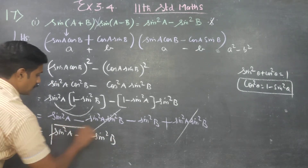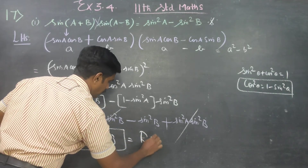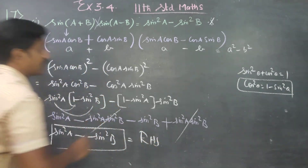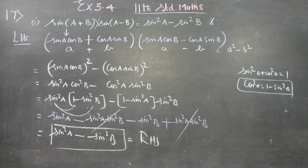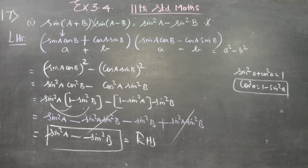LHS is equal to RHS. This is a very, very important formula — this would be needed in future also. sin(A+B) · sin(A−B) = sin²A − sin²B. Thank you.